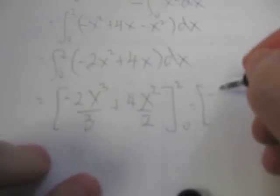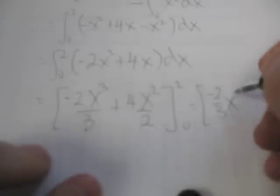If I simplify this, of course, is negative 2 thirds x cubed plus 2x squared between 0 and 2.